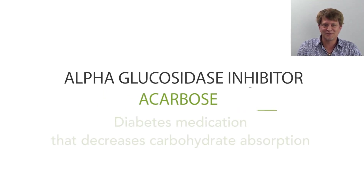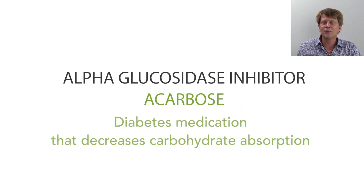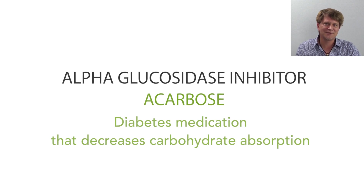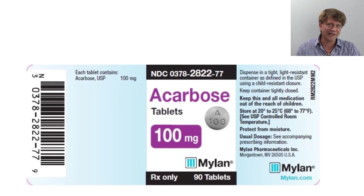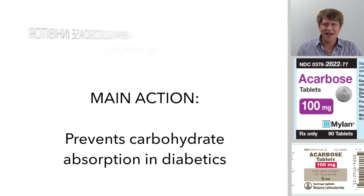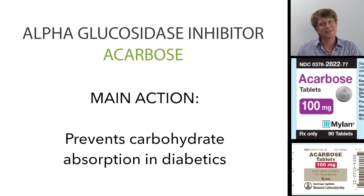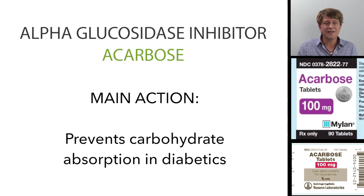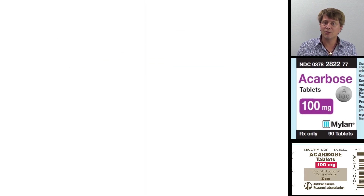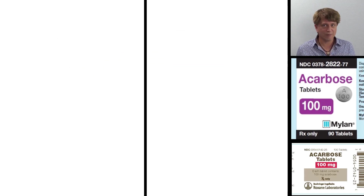Thanks for joining me as I talk about the alpha-glucosidase inhibitors. Acarbose is an alpha-glucosidase and an alpha-amylase inhibitor. In order to understand acarbose, we're going to have to understand what alpha-glucosidase and alpha-amylase are.